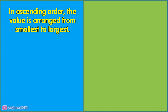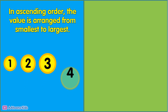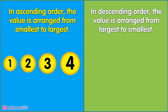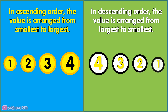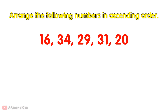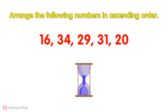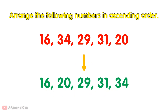Recap. In ascending order, the value is arranged from smallest to largest, like 1, 2, 3, 4, and so on. In descending order, the value is arranged from largest to smallest, like 4, 3, 2, 1. Arrange the following numbers in ascending order. The ascending order is 16, 20, 29, 31, 34.